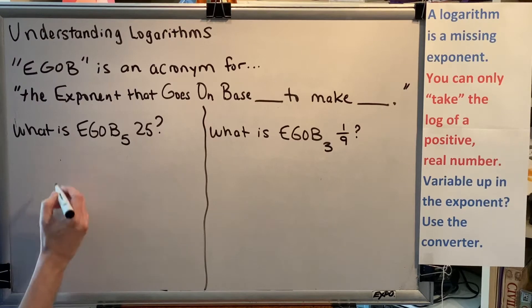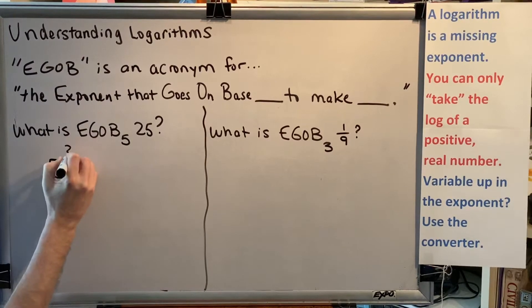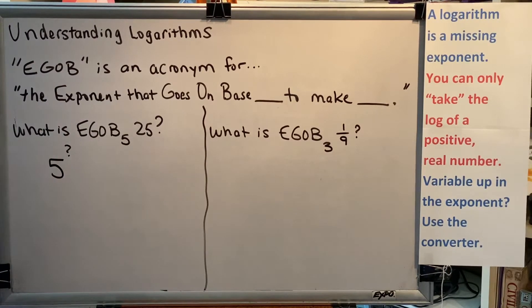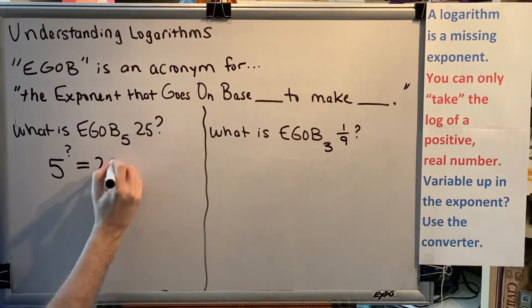What is the exponent that goes on base 5? We could write that in that way, to make 25. Or in other words, equals 25.